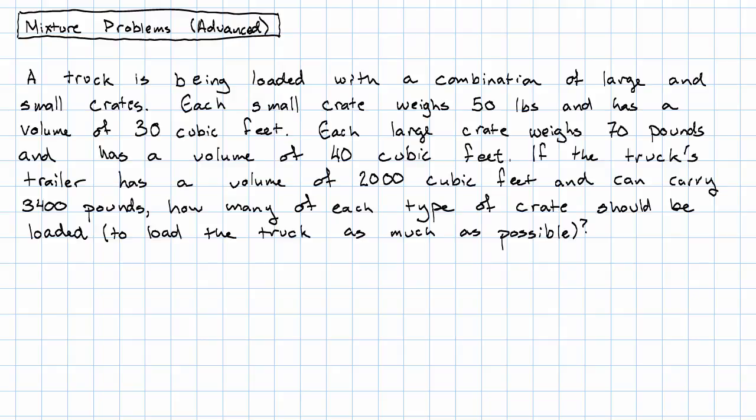Suppose a truck is being loaded with a combination of large and small crates. Each small crate weighs 50 pounds and has a volume of 30 cubic feet. Each large crate weighs 70 pounds and has a volume of 40 cubic feet. If the truck's trailer has a volume of 2,000 cubic feet and can carry 3,400 pounds, how much of each type of crate should be loaded to load the truck as much as possible?